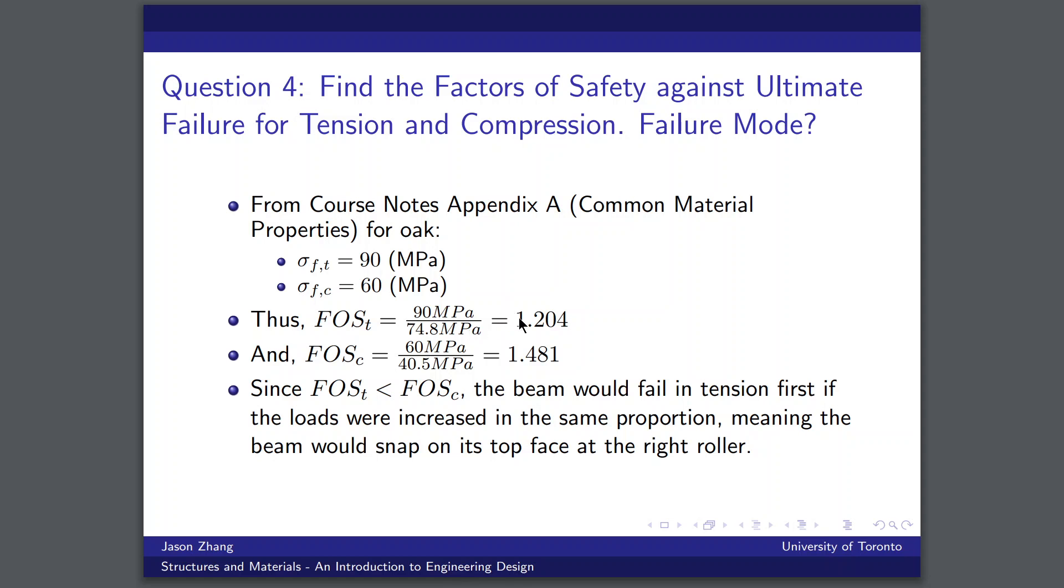So calculating our factor of safety is just dividing our ultimate stress by the maximum stress experienced by the beam. So our FOS for tension is approximately 1.204 and for compression it's 1.481. Given that the factor of safety for tension is less than that for compression, we know that the beam would fail in tension first if the loads were increased while remaining proportional to each other, meaning the beam would snap on its top face at the right roller and that's how it would fail first.